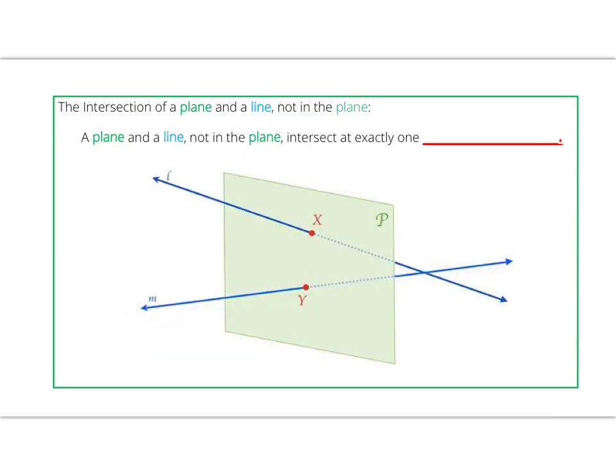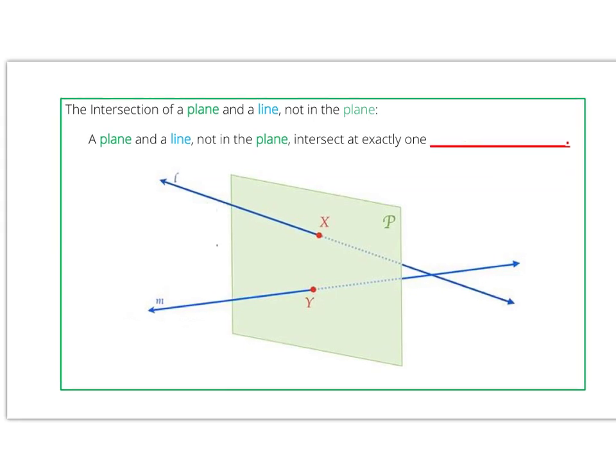Our next figure represents some objects intersecting. Here we have the intersection of a plane and a line not in the plane. A plane and a line not in the plane intersect at exactly one point.